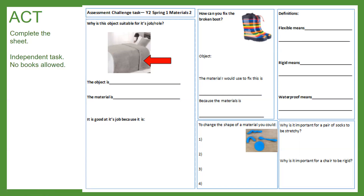Moving down to the third box: to change the shape of a material, you could... Have a look at the material shown, think about what it is, and we'd like you to think of four different ways you could change its shape.